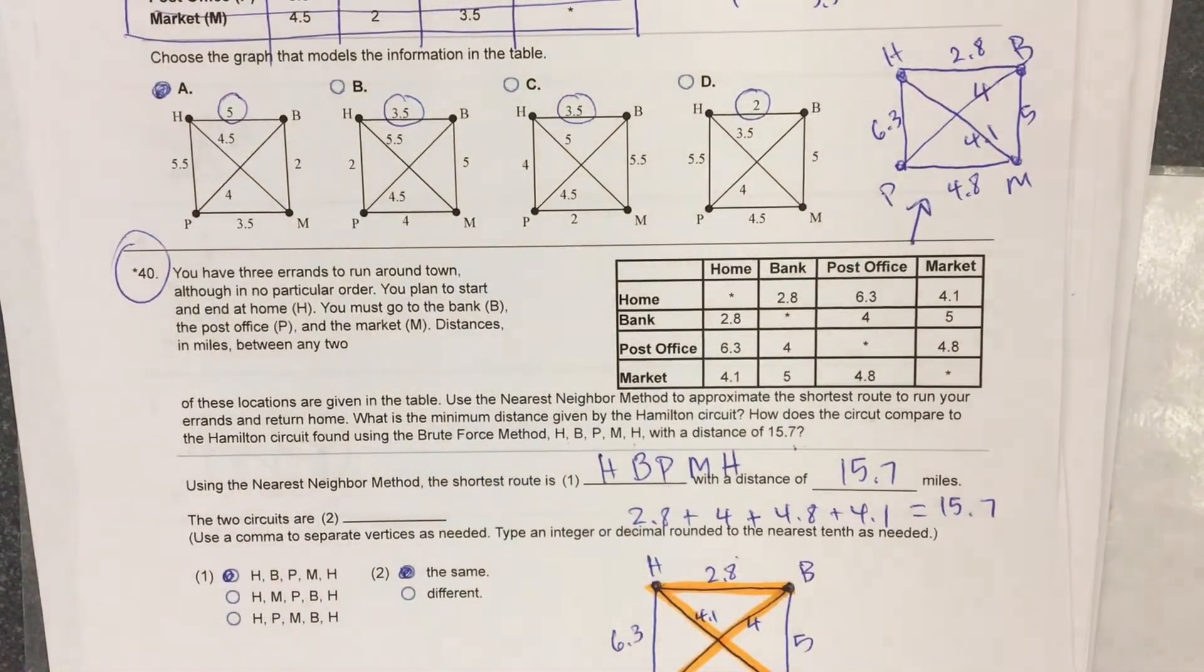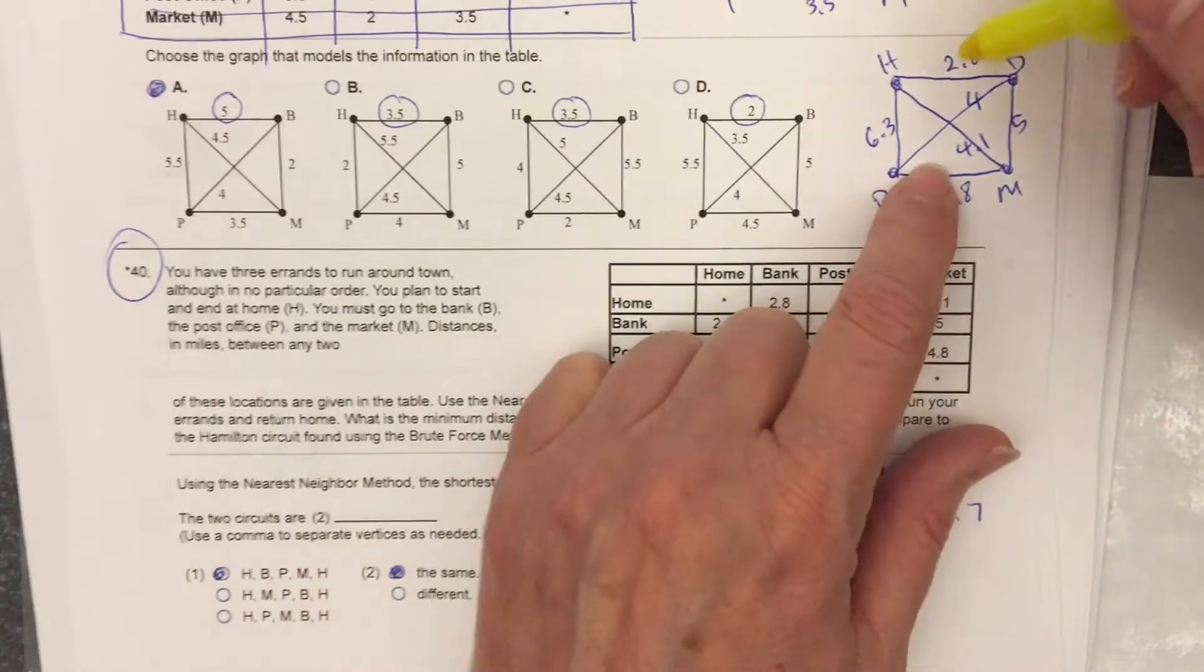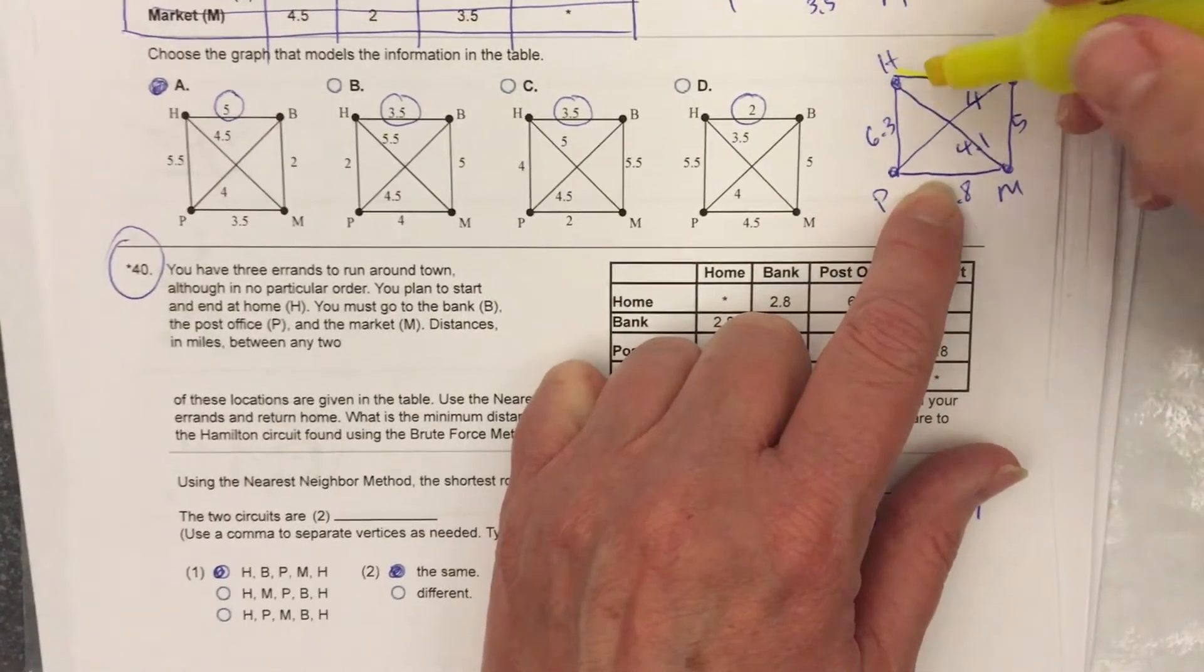Then they want you on problem 40 to do nearest neighbor. Starting at home. Home, the shortest one is the bank. We'll go to the bank.